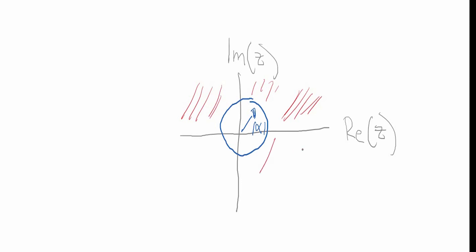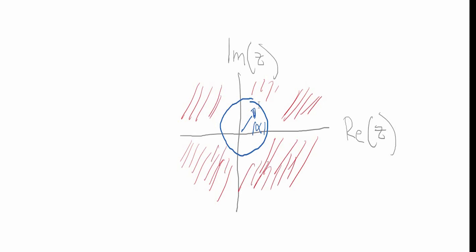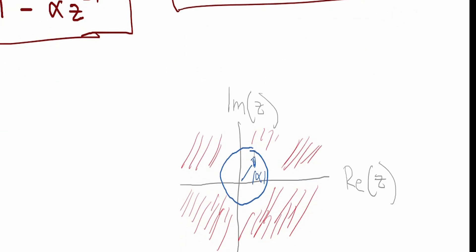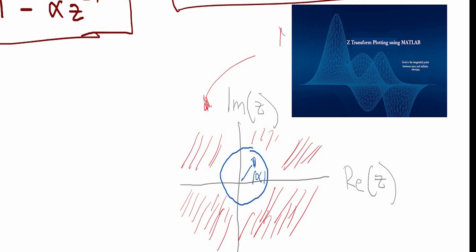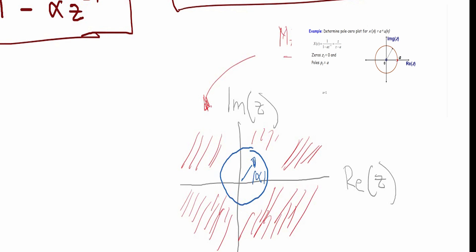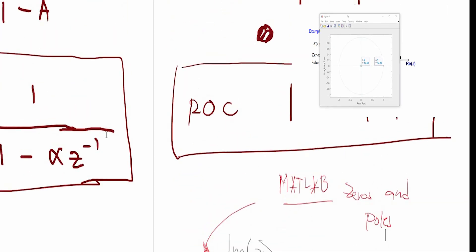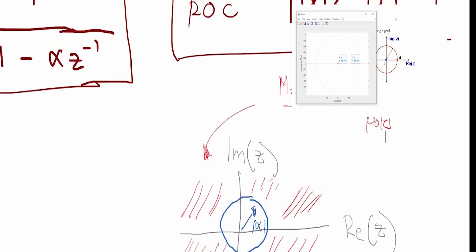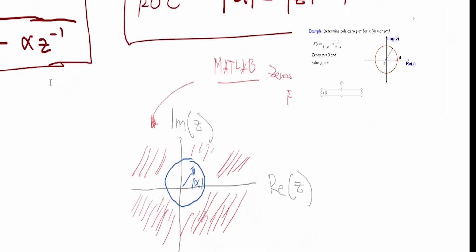This is the figure for the region of convergence. I've already made a video on this. If you want to make a graphical version using MATLAB, you can also check out my other video on zeros and poles on my channel. That's it for today — thank you for listening.